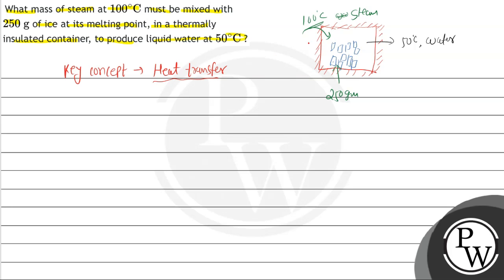Now what is the process? It is 100 degree steam, and the ice temperature is 0 degrees Celsius. So when steam is added, the ice will melt. But if we start with 100 degree steam, it will convert from 100 degree steam to 100 degree water.